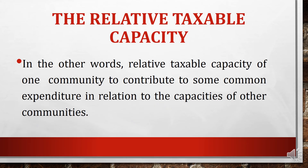In other words, the relative taxable capacity of one community to contribute to some common expenditure in relation to the capacities of other communities — where one community has a taxable capacity for a common expenditure and a particular community has a capacity for each community — is called relative taxable capacity. We can very easily interpret that the taxable capacity of richer communities is larger than that of poorer communities.